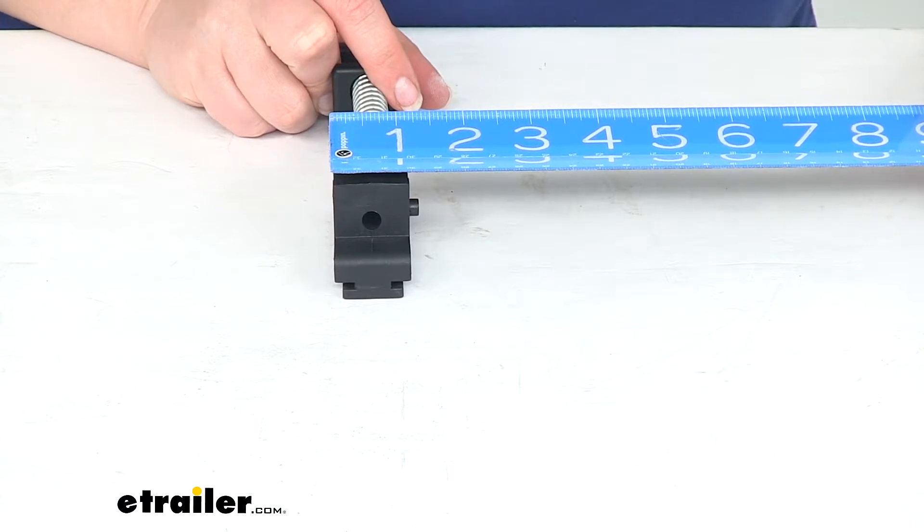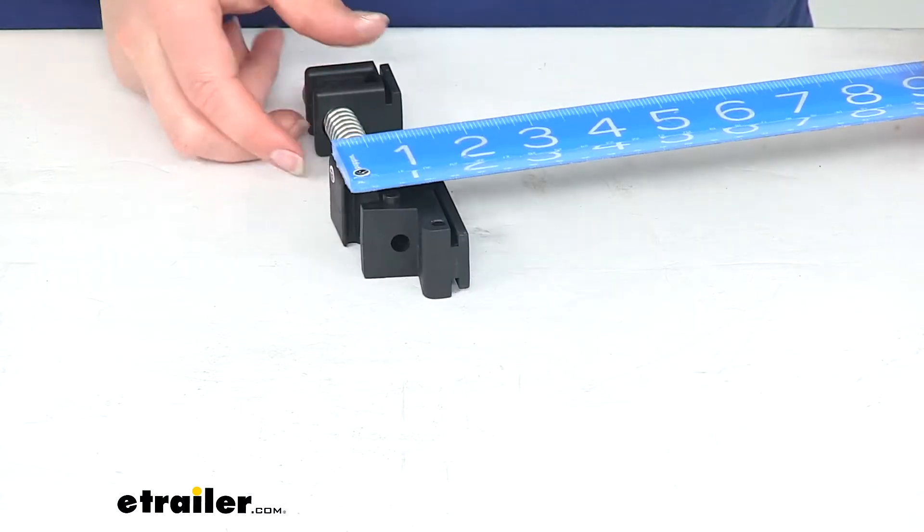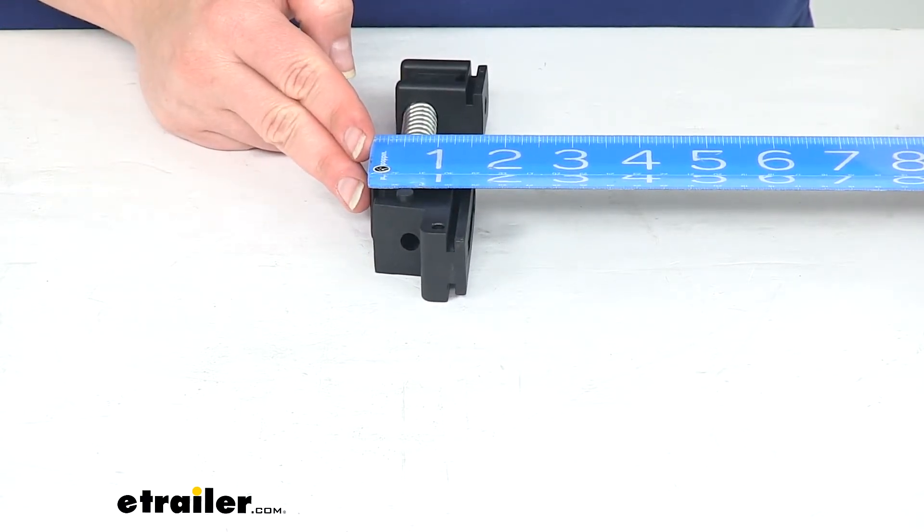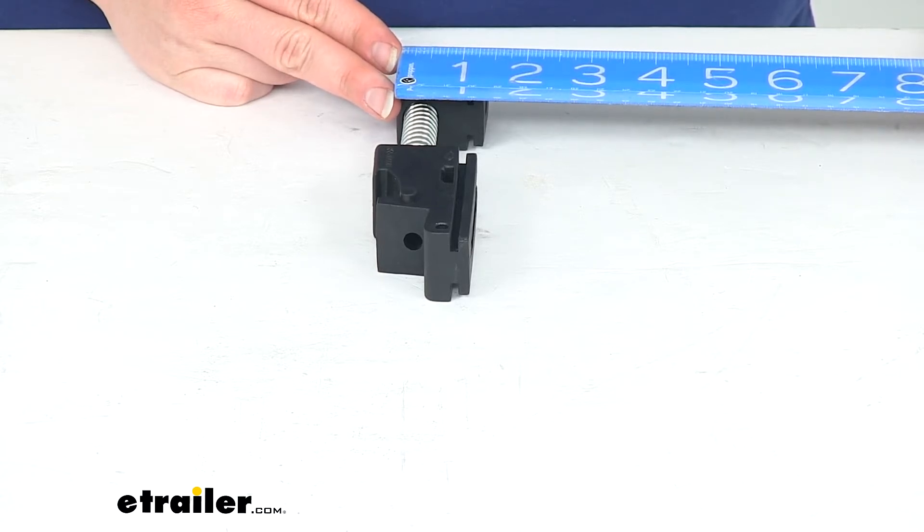They're both about an inch and a quarter wide. And the taller bracket, or the longer bracket is about an inch and a half tall. And this little guy is just about an inch and three eighths.